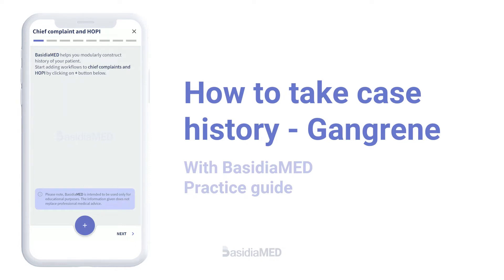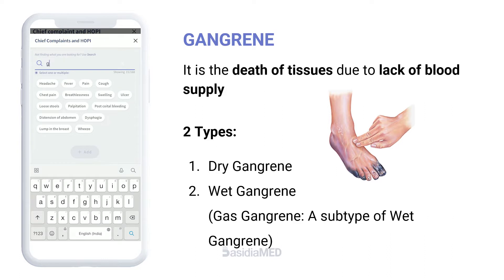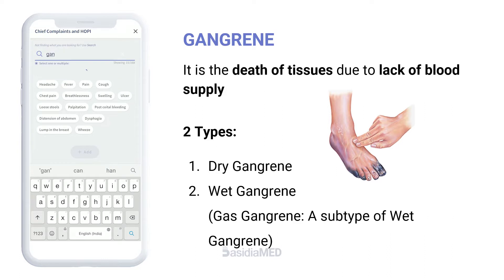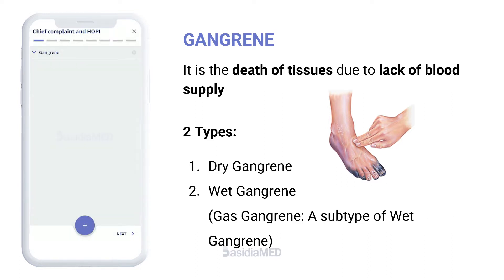How to take case history of gangrene. Gangrene refers to the death of tissues due to lack of blood supply. There are two broad types: dry gangrene and wet gangrene. Gas gangrene is a subtype of wet gangrene.